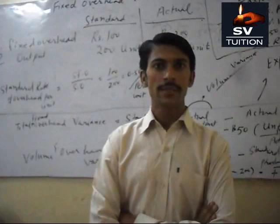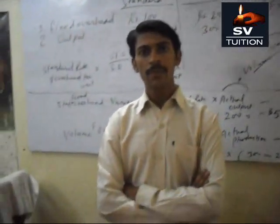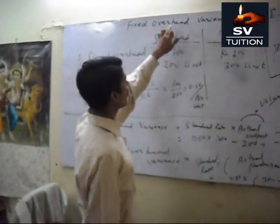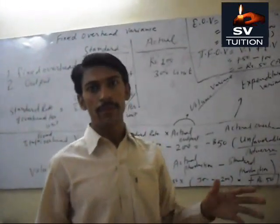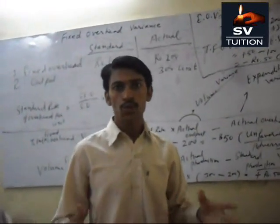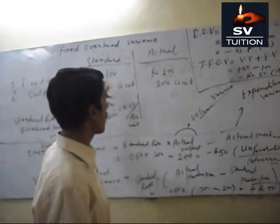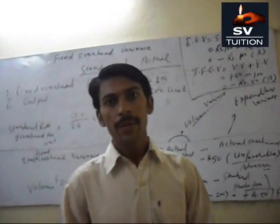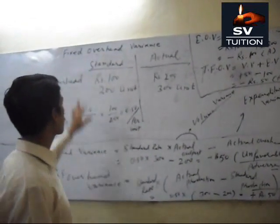Welcome dear students and friends in accounting education. Today's topic is fixed overhead variance. Fixed overhead variance is the difference between actual cost of overhead and standard cost of overhead. First of all, we should know what is fixed overhead.